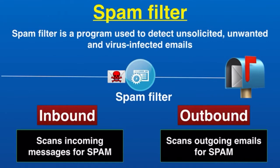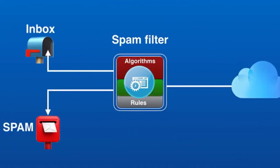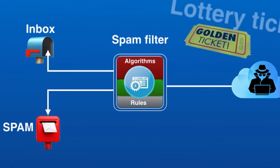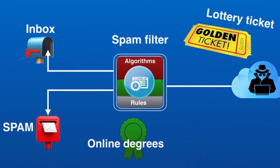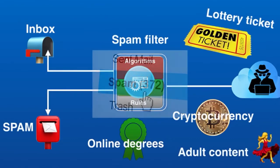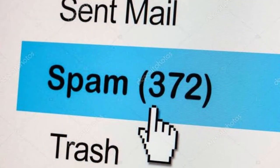ISPs use both methods to protect their customers, typically focusing on inbound filters. Primarily, spam filters are designed to identify incoming dangerous emails from attackers or marketers. Attackers often use spam emails that claim to offer beneficial services such as lottery tickets, online degrees, antivirus warnings, cryptocurrency, financial services, adult content, and so on.